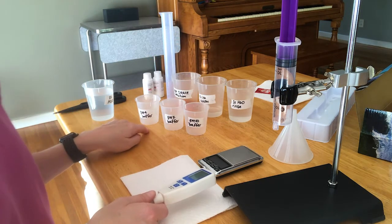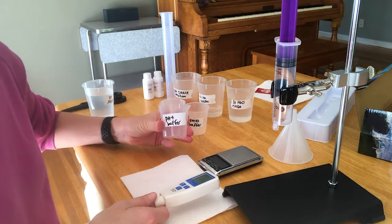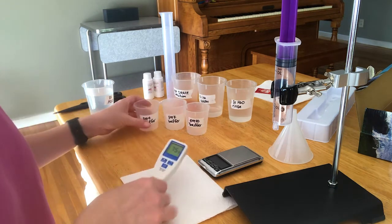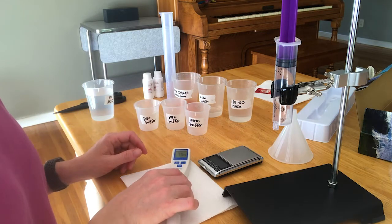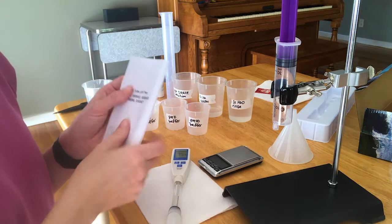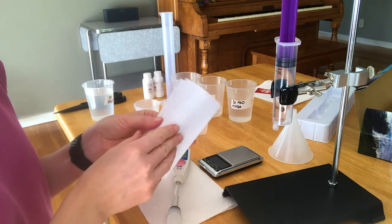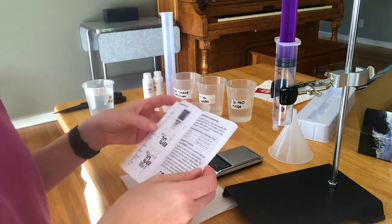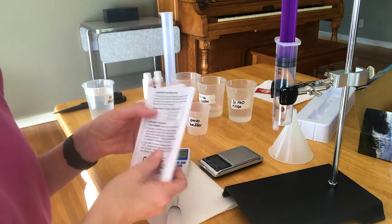We're going to calibrate it using these three buffers that come with your kit. These act as reference solutions so that the pH meter knows, okay, this is what a pH 4 solution looks like, this is what a 7 solution looks like. The instructions are in this booklet that comes with your pH meter. You're just going to perform a standard calibration.